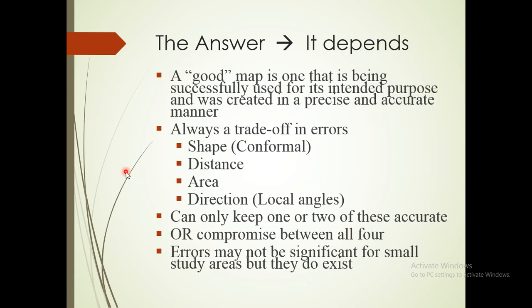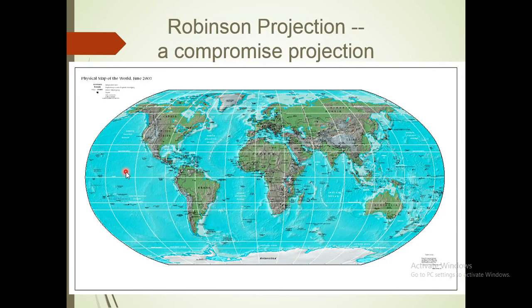Whether a map is 'good' depends on its purpose — a good map is one that is successfully used for its intended purpose. There is always a trade-off between four properties: shape, distance, area, and local angle. You can only compromise one against another. Errors may be significant even for small study areas, but they always exist. Every projection involves some compromise.